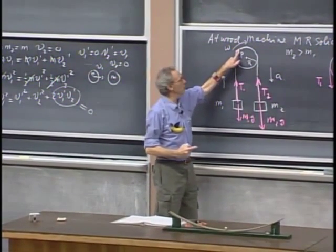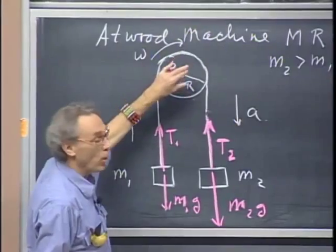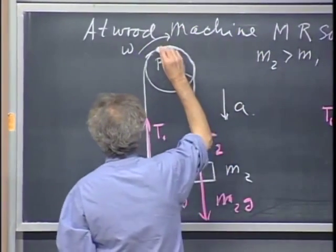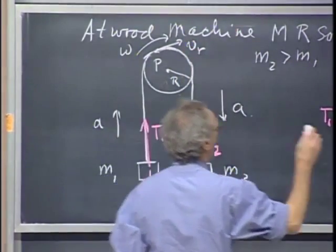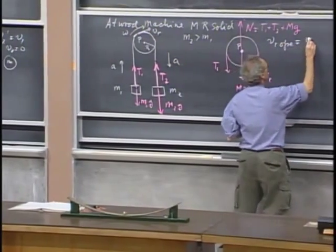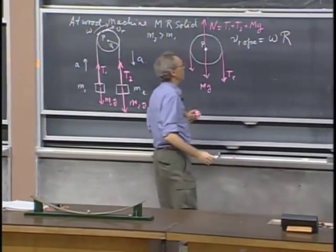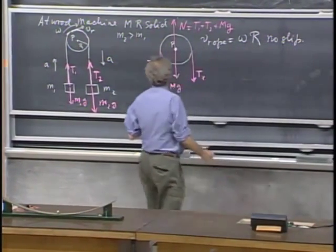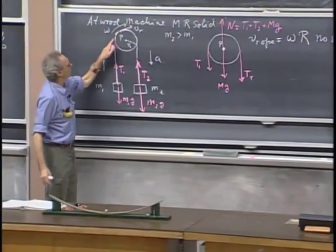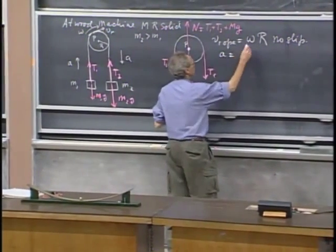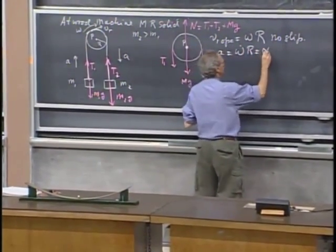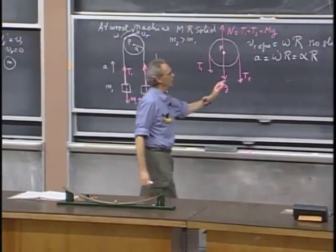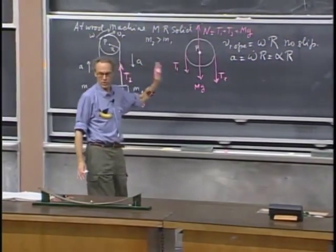We're going to calculate the acceleration under the condition that the rope does not slip. That means there is friction with the pulley — otherwise the rope would slip. If there is no slip, when the rope moves one centimeter, the wheel also turns at the circumference one centimeter. That means the velocity of the rope v_rope must equal omega times r of the pulley. The acceleration A is therefore omega-dot times r, which equals alpha times r. This is the important no-slip condition.